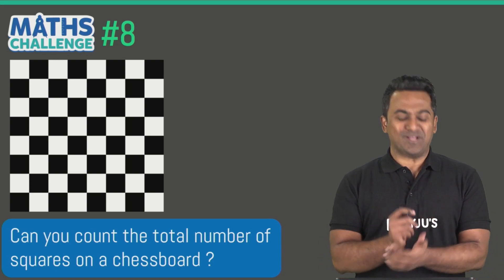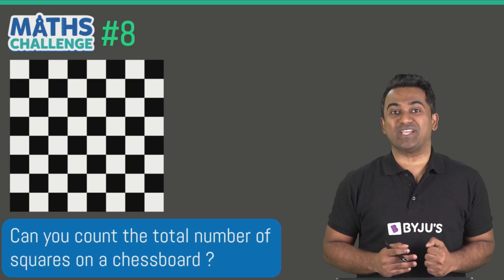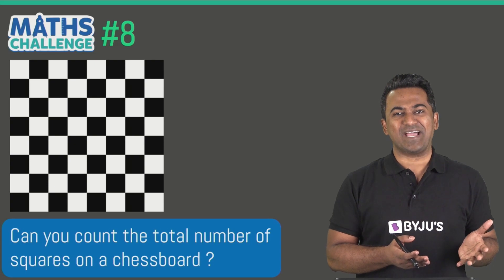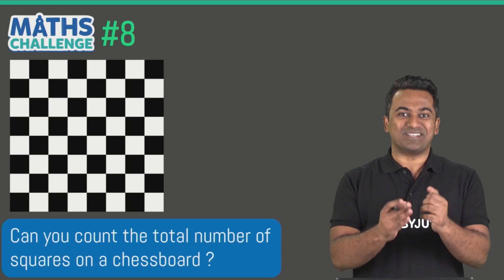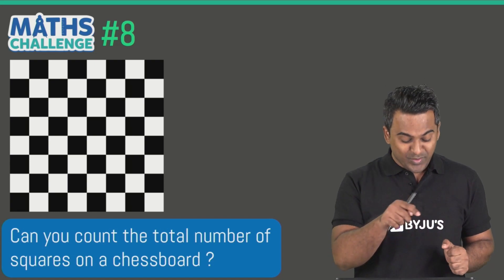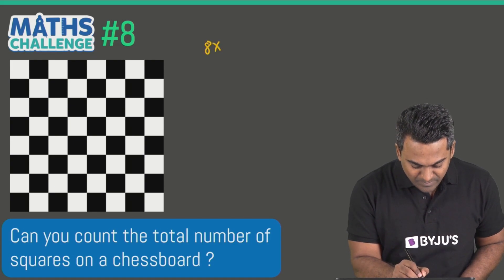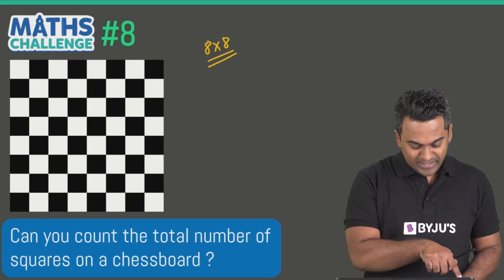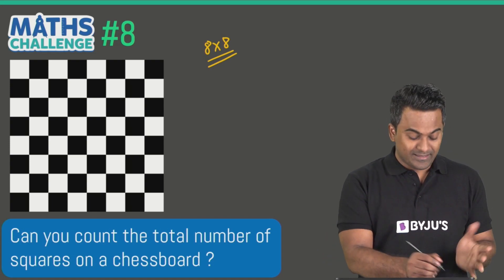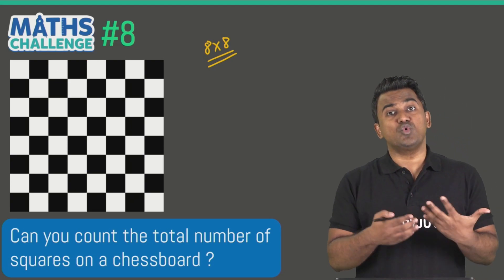Hello everybody and welcome to math challenge number 8, where the challenge is to count the number of squares on a chessboard. I'm not talking about just the smaller squares — I'm talking about any square that you can see on this chessboard. This is an 8 by 8 square, with 8 here and 8 there. I'm not just talking about the 1 by 1 squares.